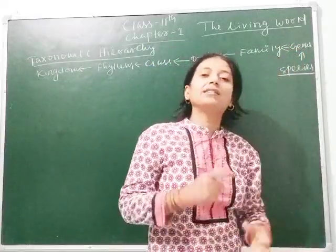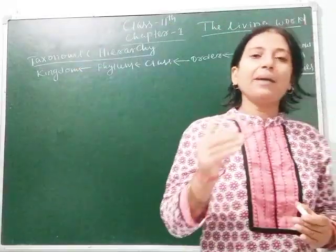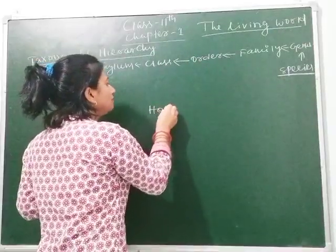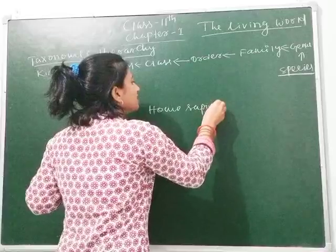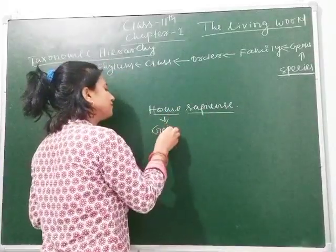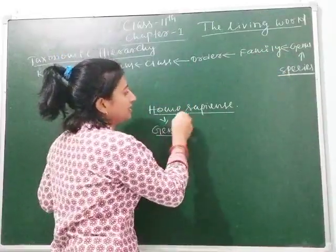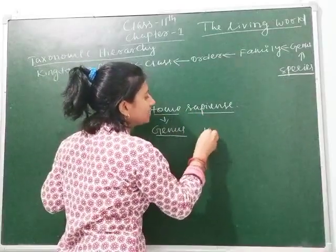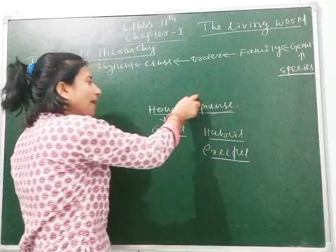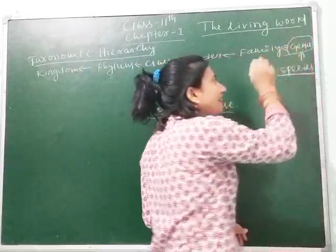Then genus. Genus is the combination of many species. Homo is the genus, and sapiens, erectus, and habilis are different species. Homo sapiens is the biological name of human beings. Homo is the genus, which is made up of many species — Homo sapiens, Homo habilis, Homo erectus — and they combinedly make the genus Homo. So we can say that genus is the combination of many species.